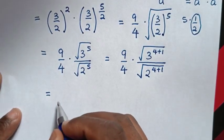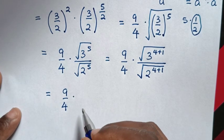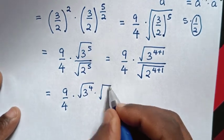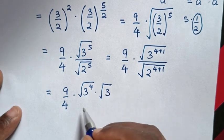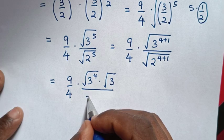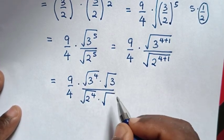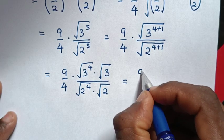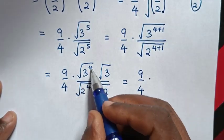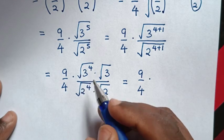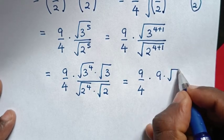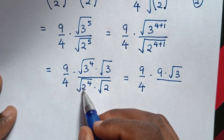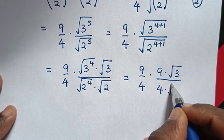Then it will be equal to 9 over 4, times: square root of 3 power of 4, times square root of 3 power of 1, which is same as 3, over square root of 2 power of 4, times square root of 2 power of 1, which is same as 2. Then: 3 power of 4, square root of 4 divided by 2 is same as 2, so 3 power of 2 is same as 9, times square root of 3, over 2 power of 4, square root of 4 divided by 2 is same as 2, so 2 power of 2 is same as 4, times square root of 2.